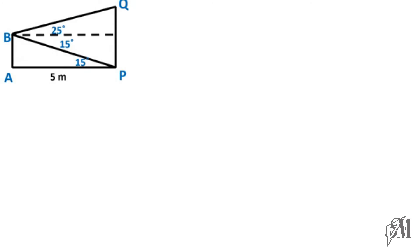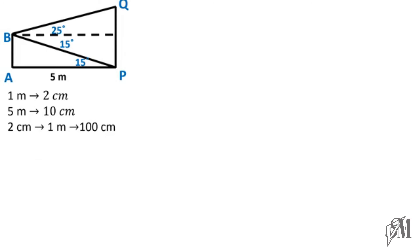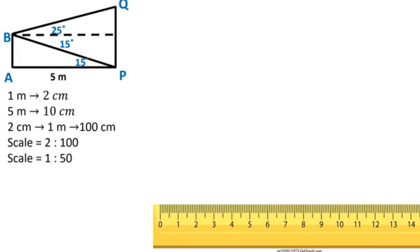Now let's decide the scale. The only length available is five meters. If I take one centimeter to represent one meter, the diagram will be very small — only five centimeters long. So to make a larger diagram, I take two centimeters to represent one meter, meaning I draw a line of ten centimeters for five meters. The scale is therefore 2 cm : 1 m, which equals 2 : 100, simplified to 1 : 50.